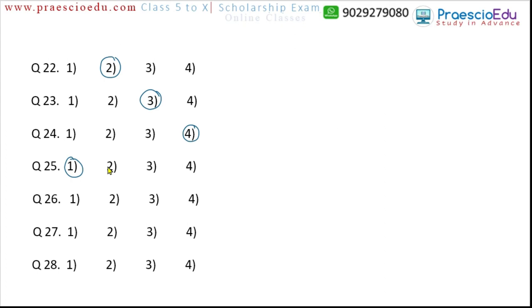Question 27: bunch, dozen, flock, and herd. Flock, herd, and bunch are all group names but not exact quantities, whereas dozen means exactly 12 — a specific count. So option two, dozen, is the different one. Question 28: almond, cashew, walnut, and pomegranate. Almond, cashew, and walnut are dry fruits, but pomegranate is a fruit. So option four, pomegranate, is the different one.